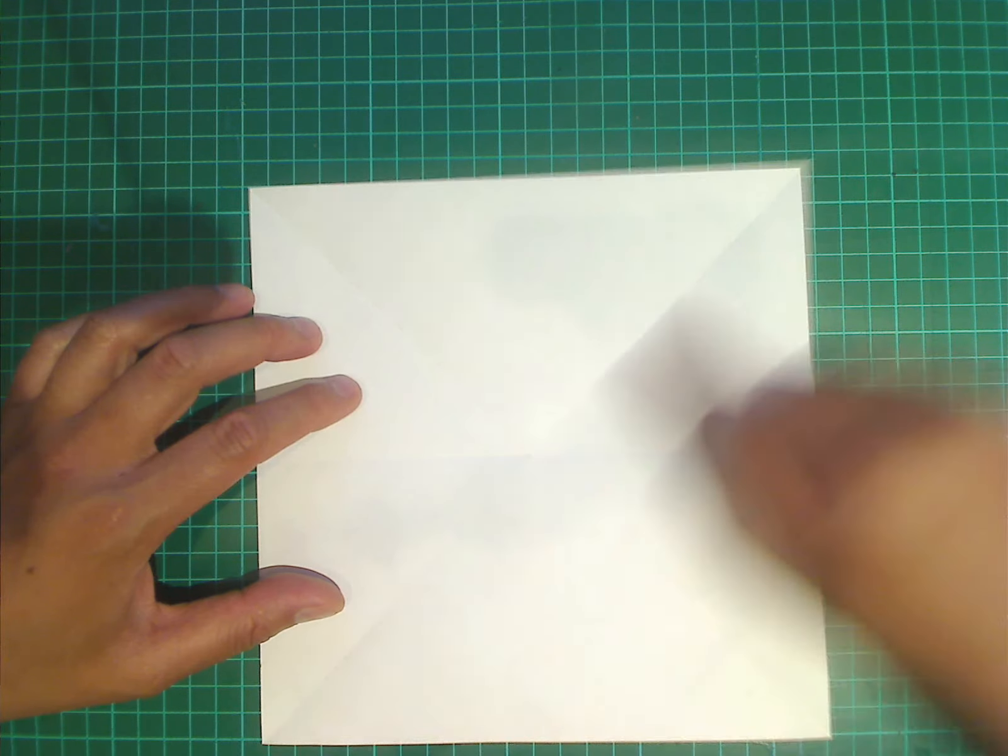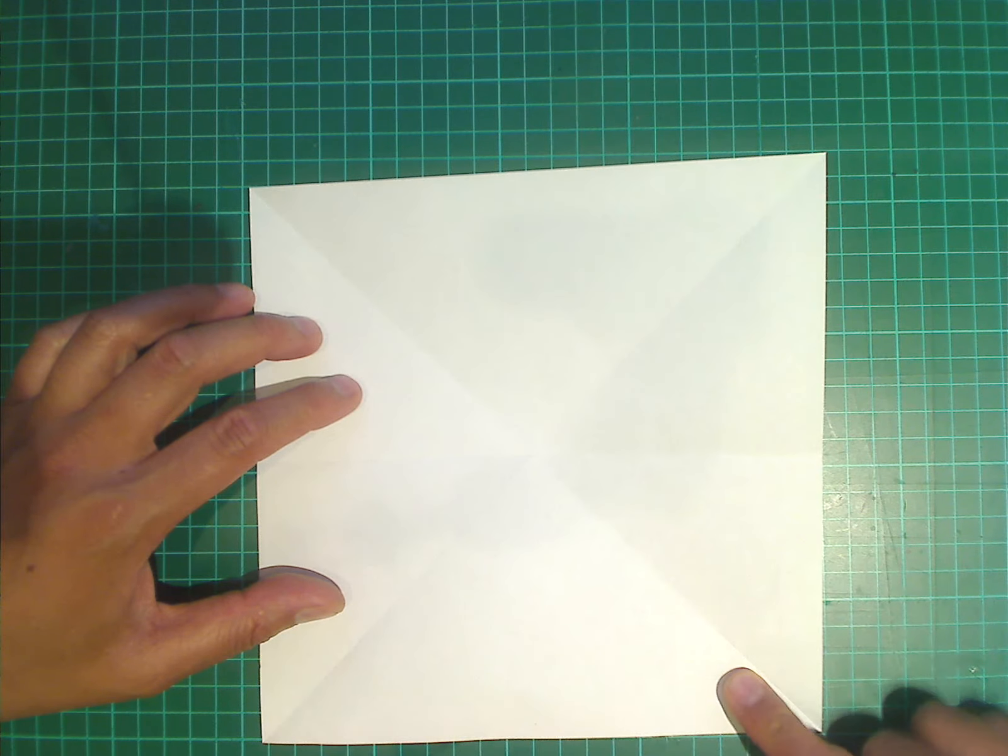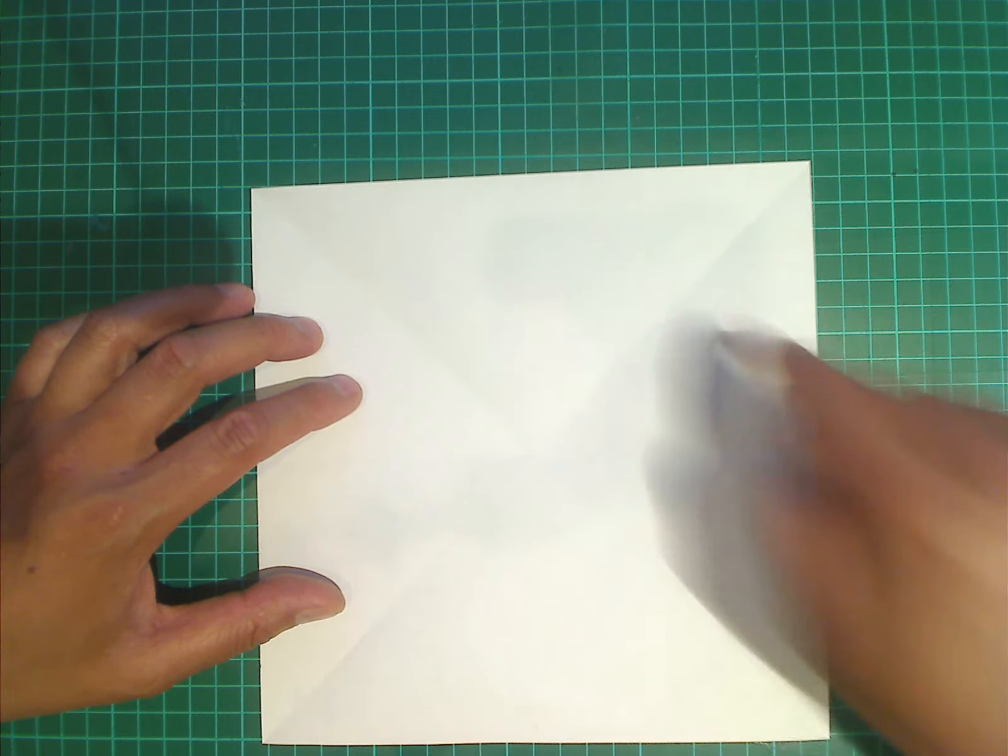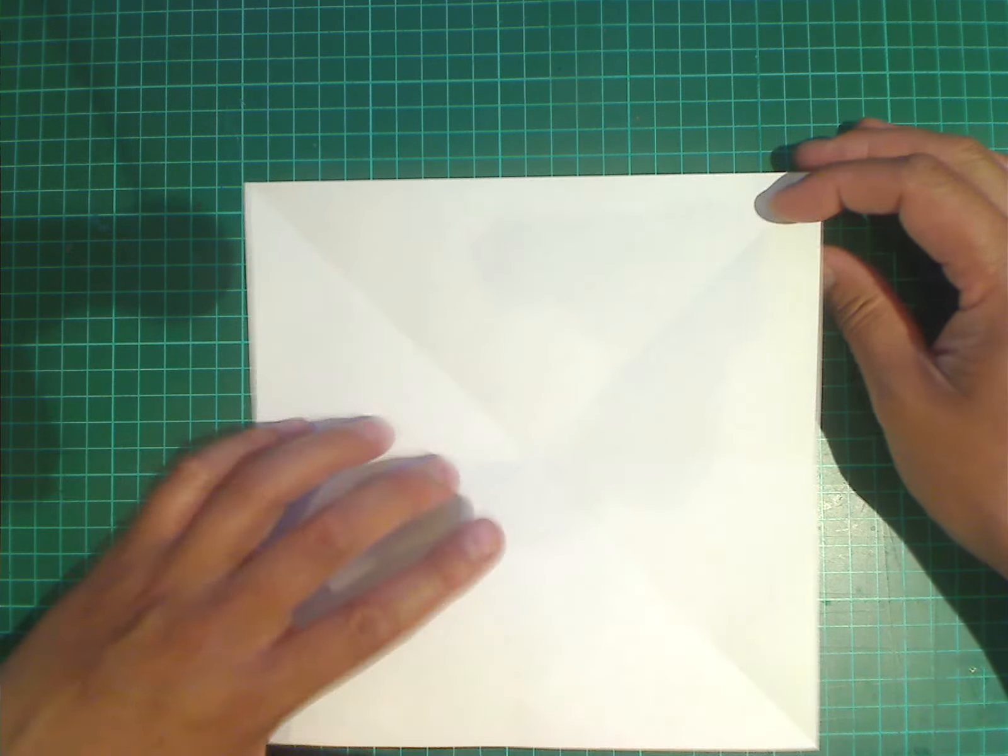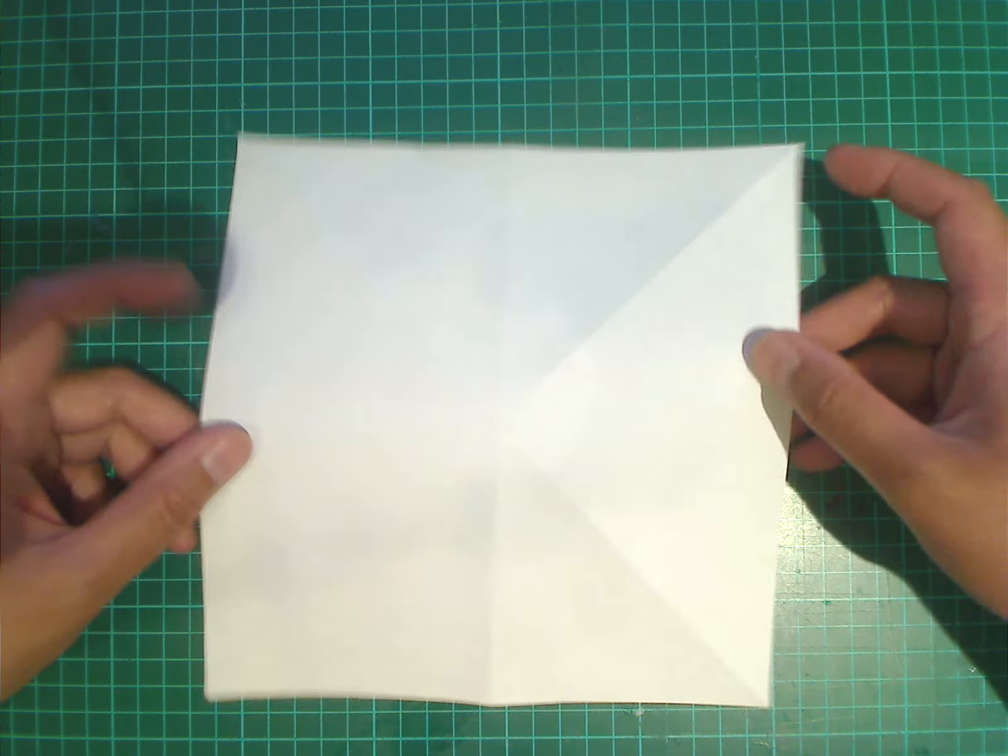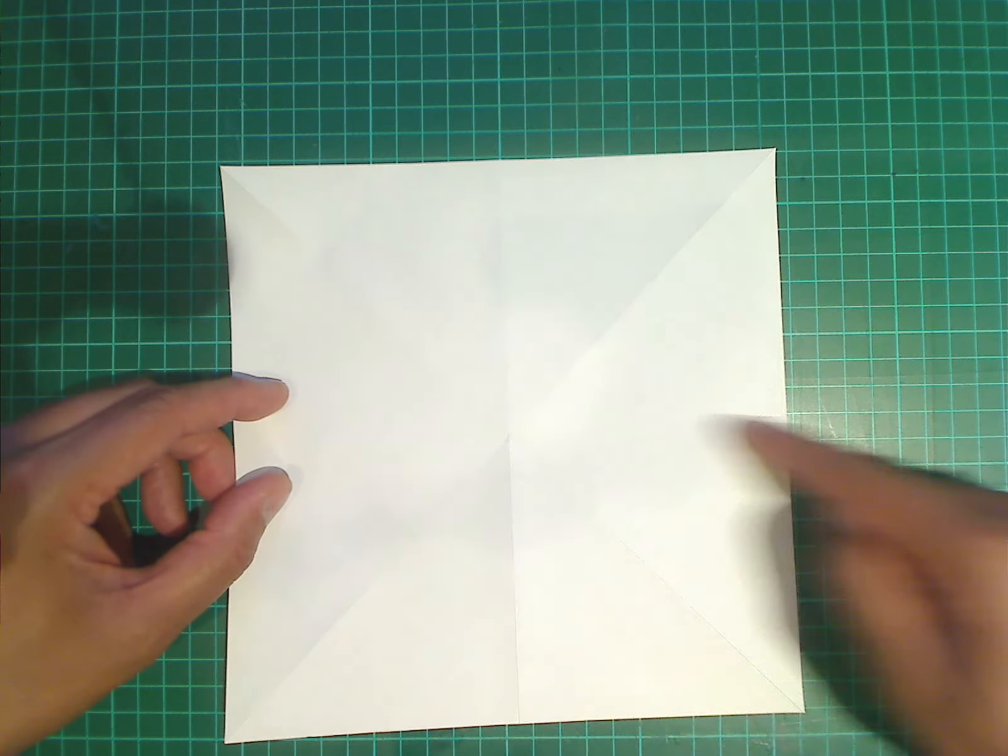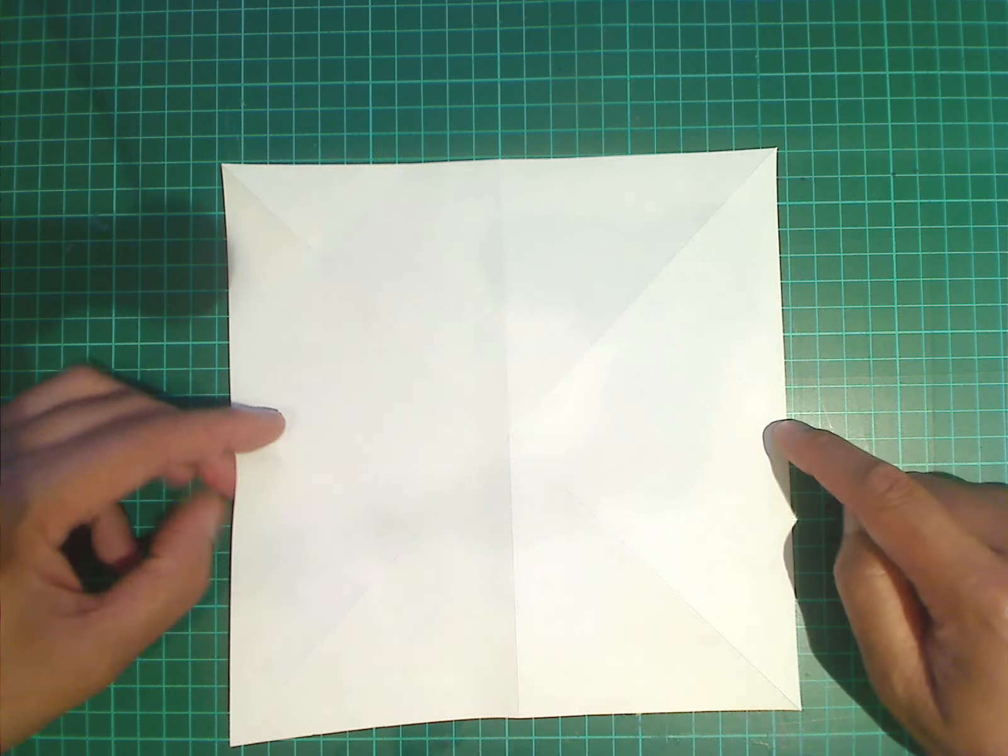So we've done two diagonals and a horizontal fold, all on one side of the paper. What we're going to do now is turn the paper over. So flip it over completely. And there's a remaining horizontal crease that has not been folded yet.